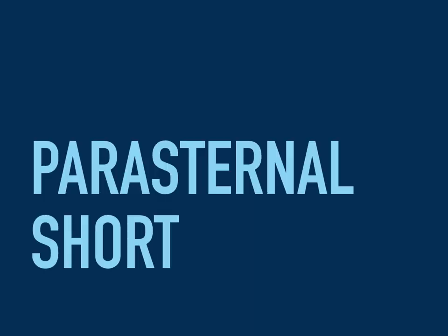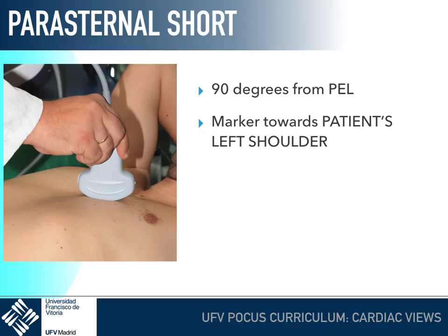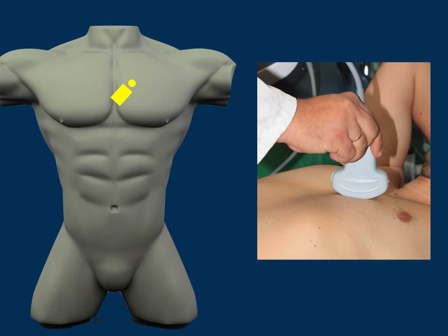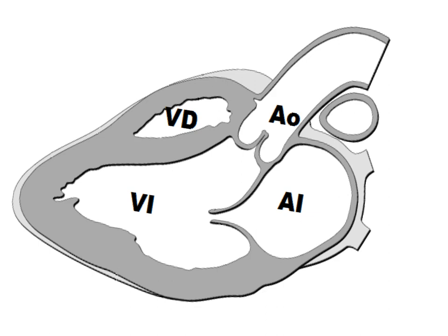For the parasternal short axis, we first obtain the parasternal long axis and then rotate the probe 90 degrees towards the left shoulder. Although there is just one parasternal long axis view, there are different parasternal short axis views depending on the level of the cut — whether we move the cut towards the base of the heart or towards the apex.